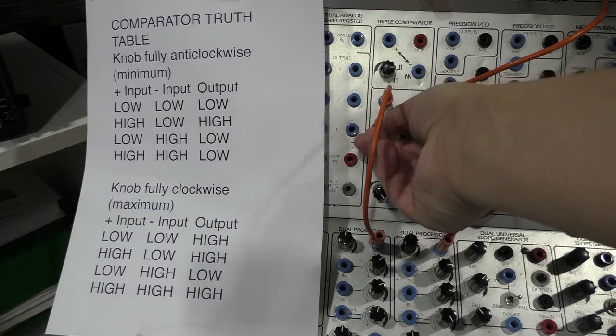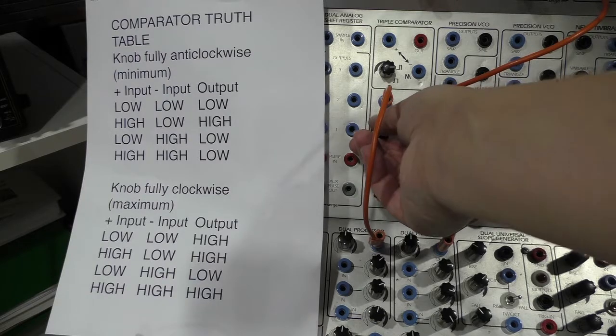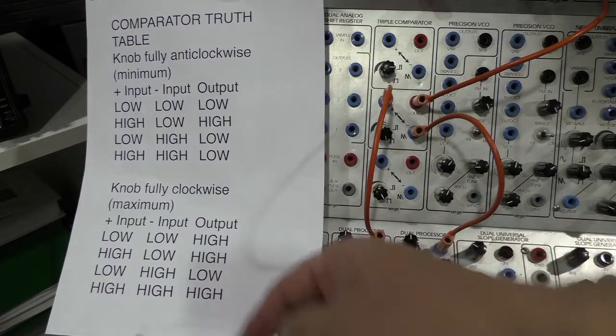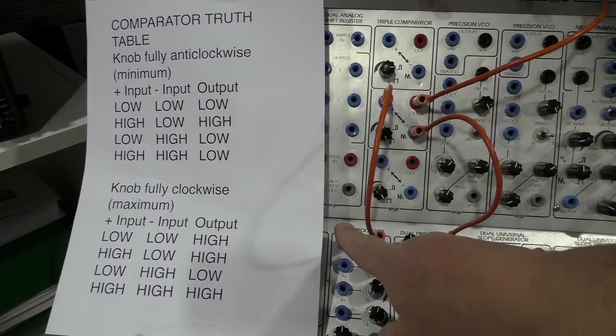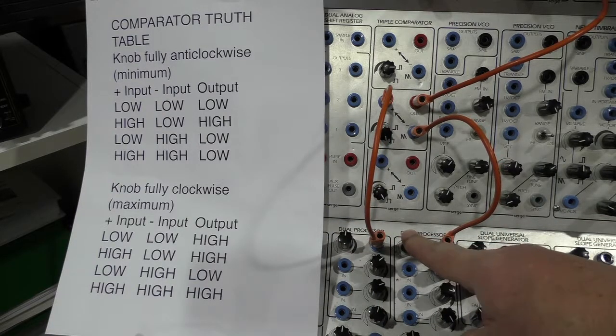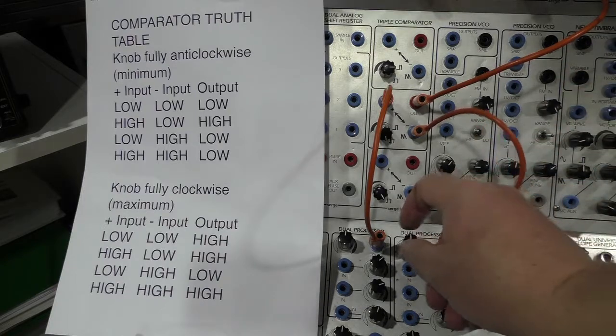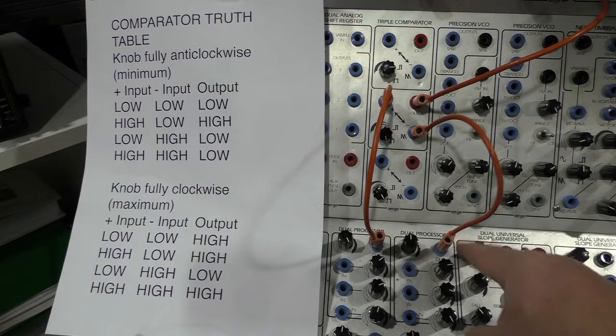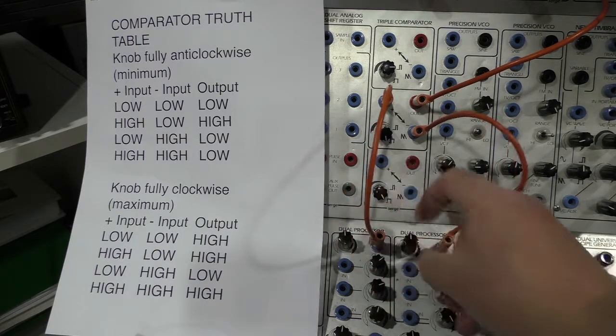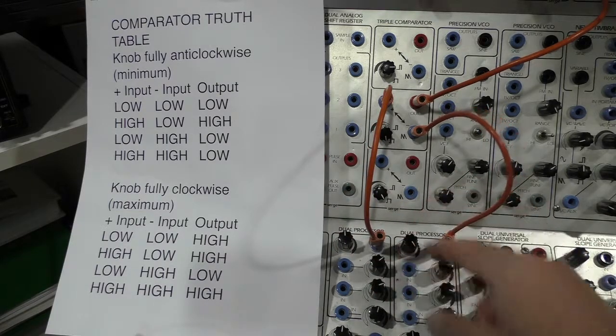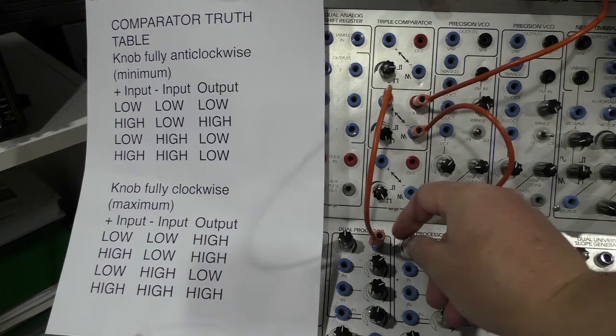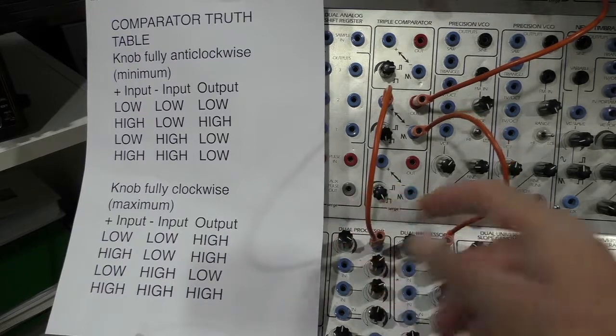With the knob of the comparator turned fully clockwise, this is the truth table. So low, low, low gives us high as you can hear, a high and a low gives us high, a low and a high gives us low, and a high and a high gives us high.